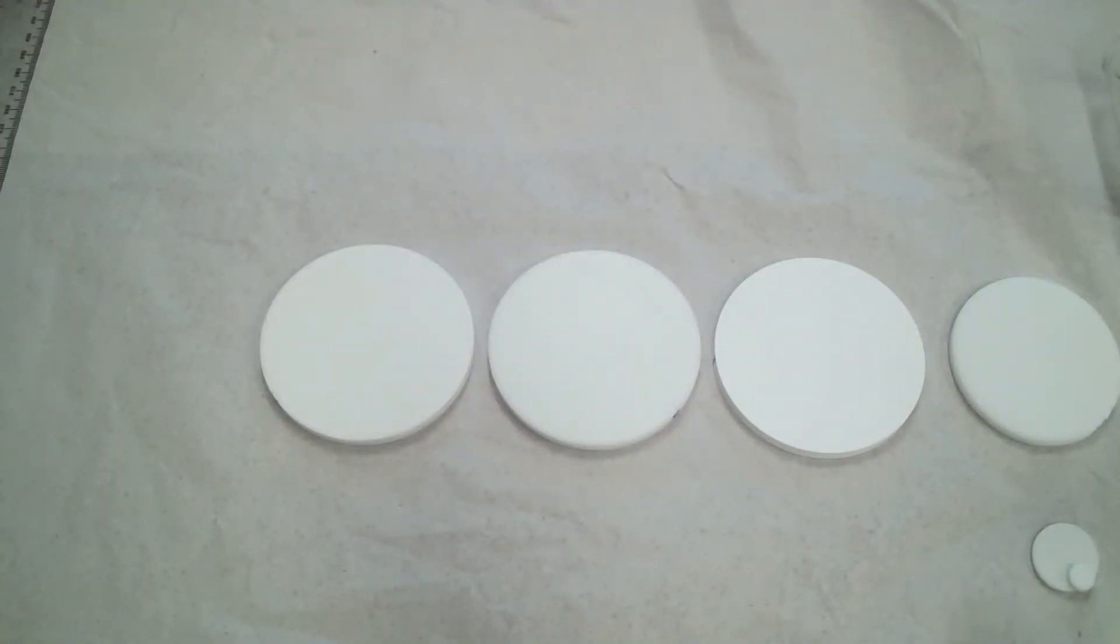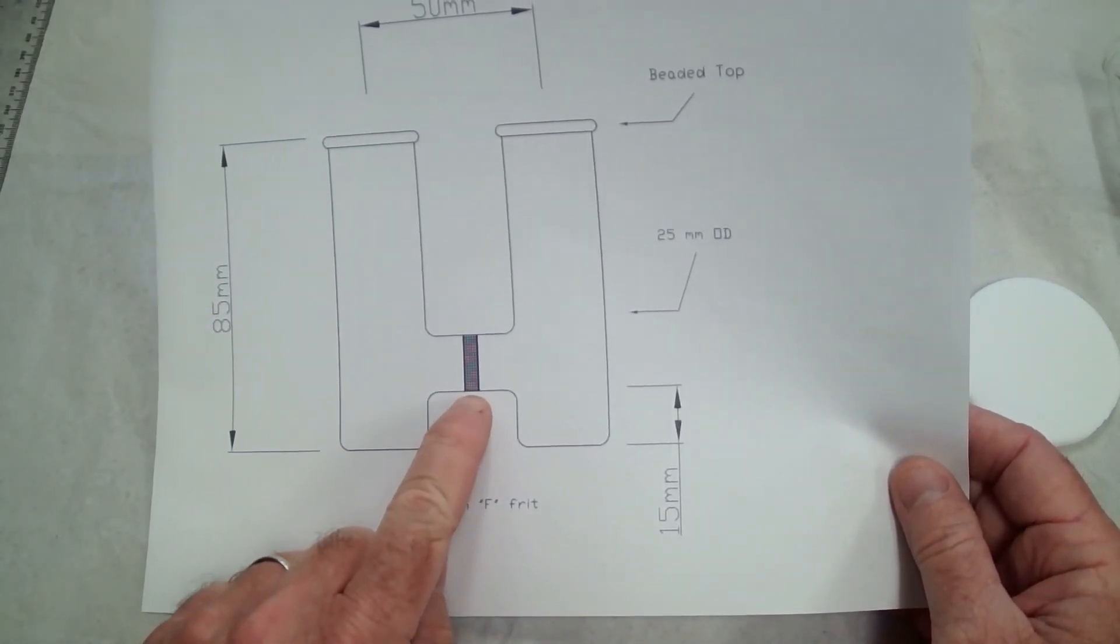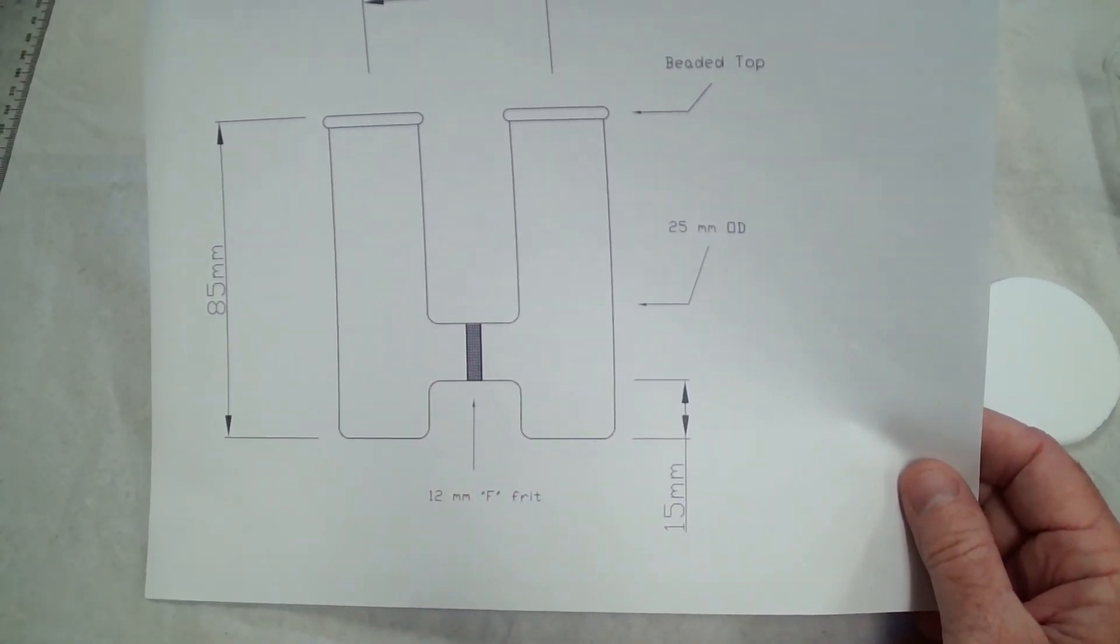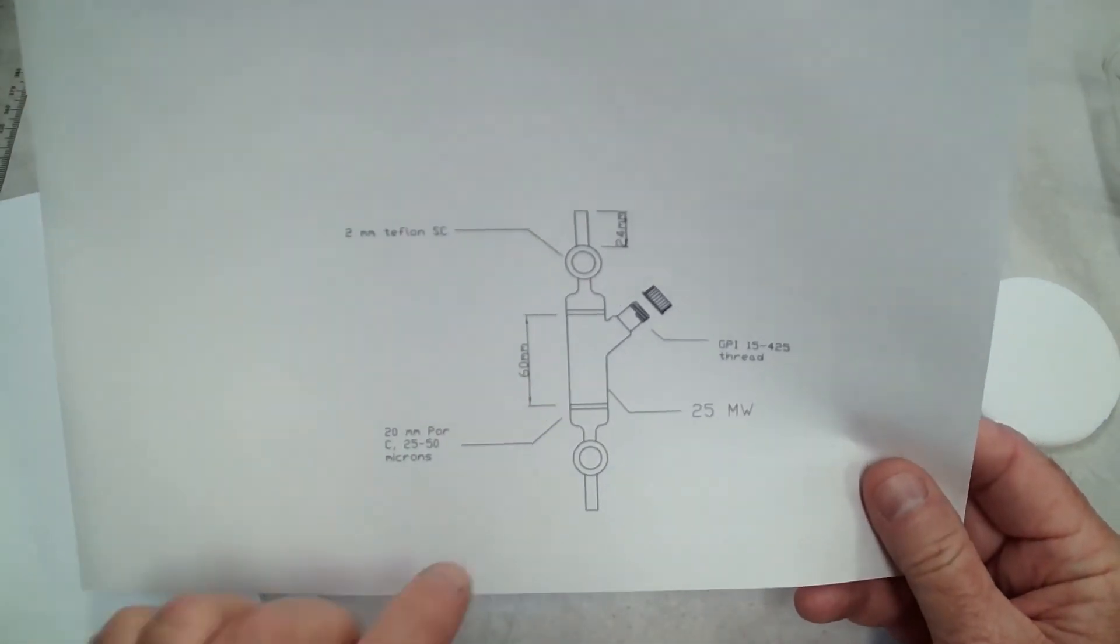These fritted discs or filter discs are used in many other applications as well, other than filtration. They're also used in electrochemistry and H-cells, and they are also used in some chemical biology and some peptide vessels.